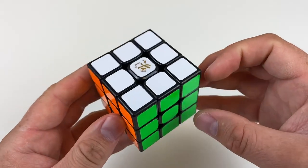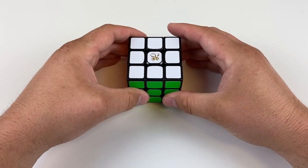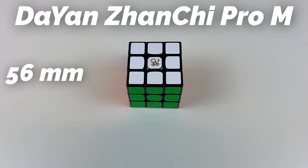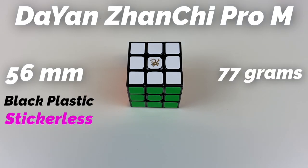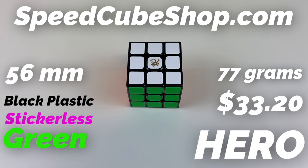Real fast, the Dayan Zhanchi Pro-M 3x3 is 56mm. It weighs 77 grams. It's available in black plastic, stickerless, and green, which is kind of random. This is also available for $33.20 using discount code HERO at checkout on speedcubeshop.com.